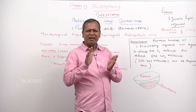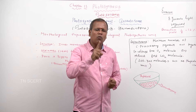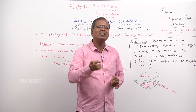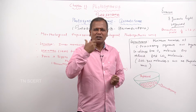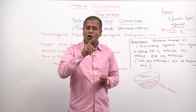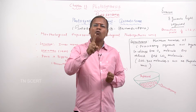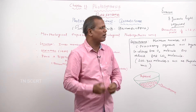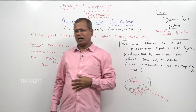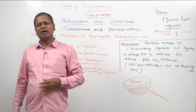8 quanta of light are required to release 1 oxygen molecule or reduce 1 carbon dioxide molecule. To release one molecule of oxygen or to reduce one molecule of carbon dioxide, 8 quanta of light are required, or 8 quantosomes participate in this process, as stated by Emerson.